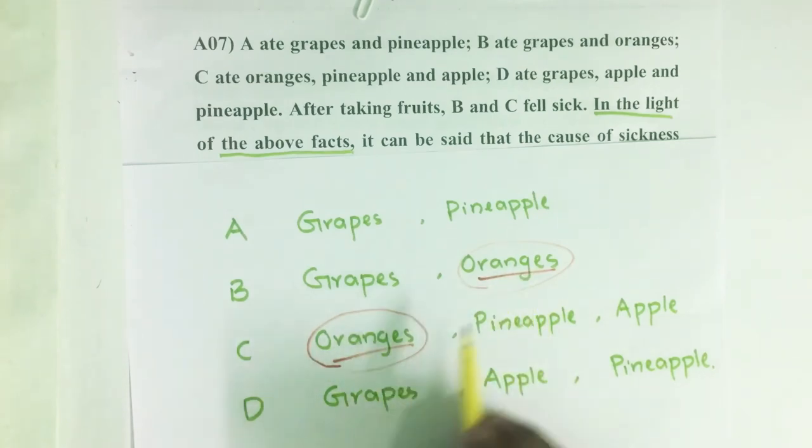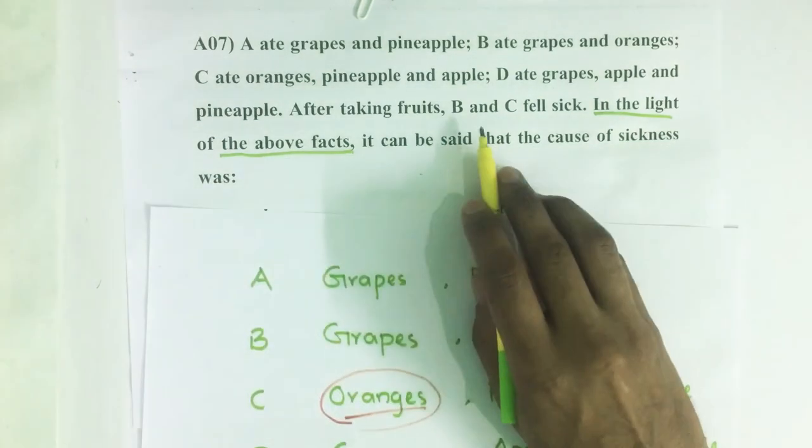So see here, oranges are eaten by only B and C. So we can conclude that oranges are the reason for the sickness of B and C.